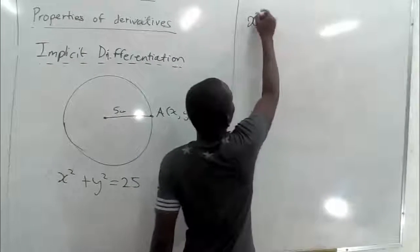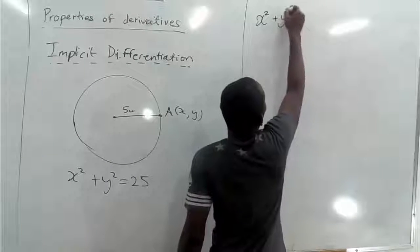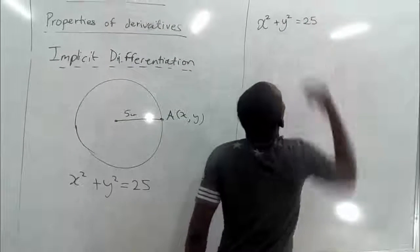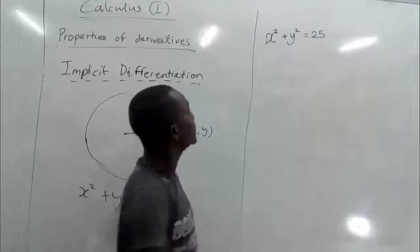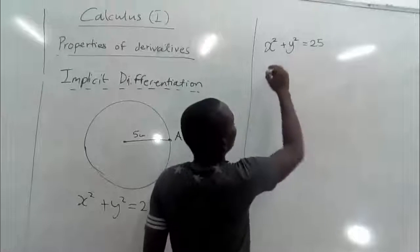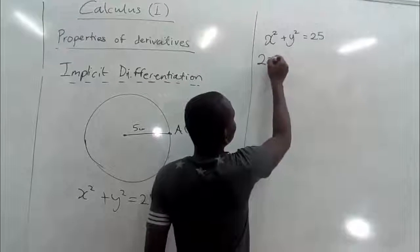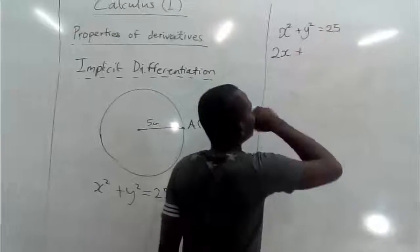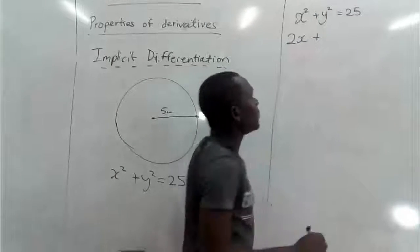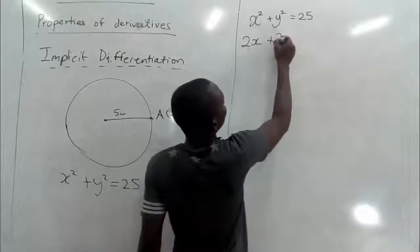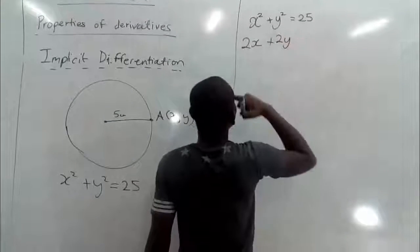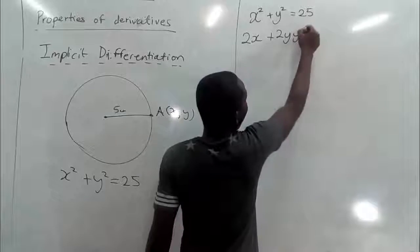We have x squared plus y squared equals 25. We are going to differentiate term by term. When we differentiate x squared we are probably getting 2x plus. And later we differentiate y. We are going to get 2y times y prime.